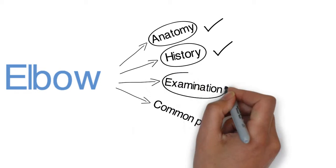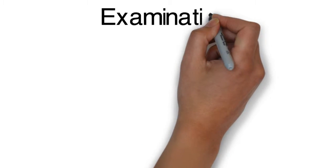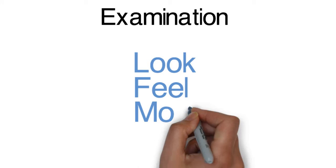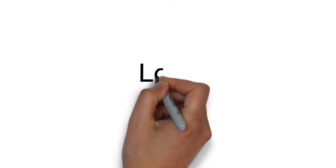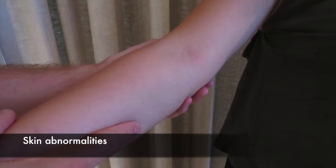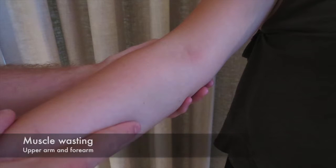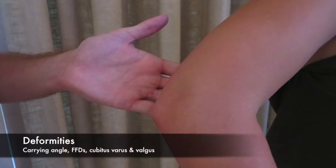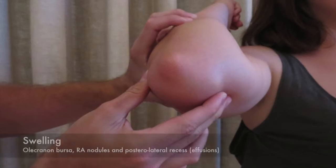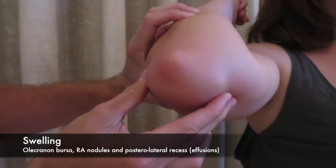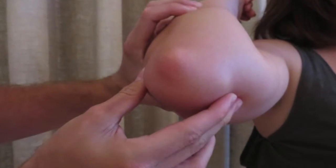Next the examination. In the examination of the elbow it is important to look, feel and move the joint. It is important to look for any skin abnormalities, muscle wasting, obvious deformities, or any swelling particularly in the posterolateral recess.